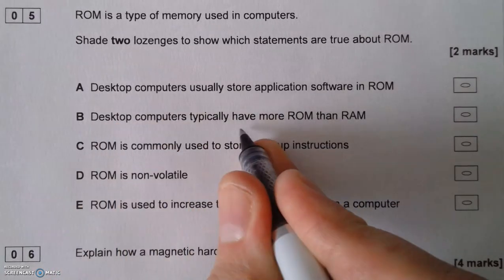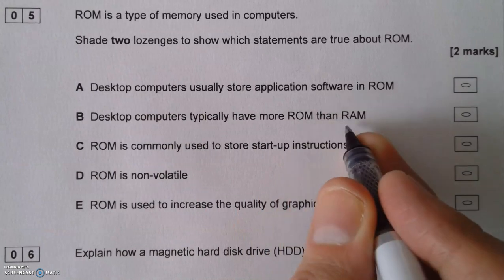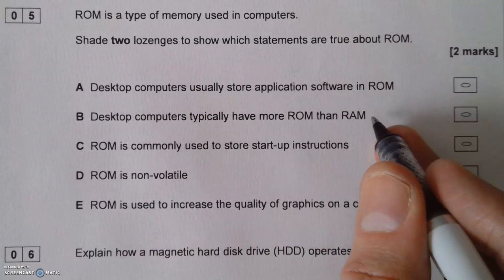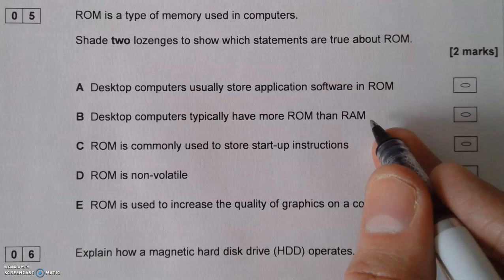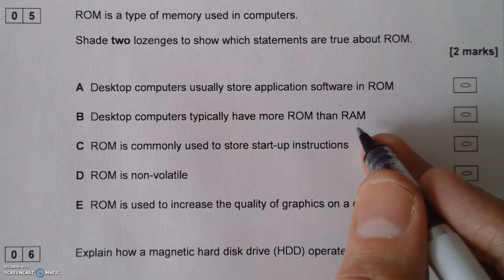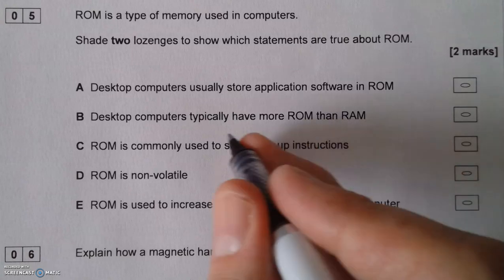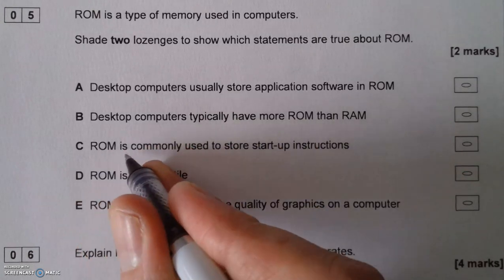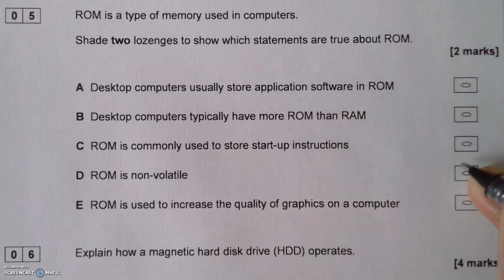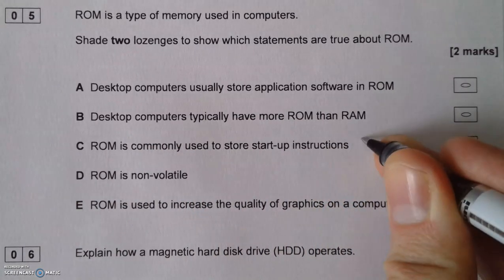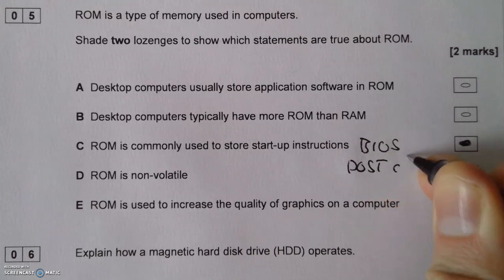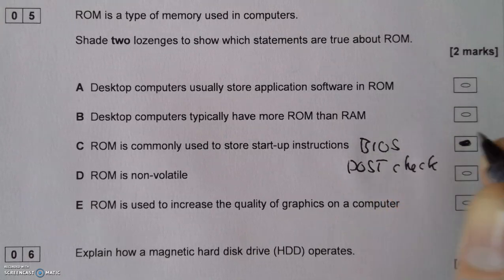Statement B: desktop computers typically have more ROM than RAM. Definitely not, not nowadays. You might have been able to say that 40 years ago, but definitely not now. You're talking kilobytes of ROM and gigabytes of RAM, so that definitely isn't true. Statement C: ROM is commonly used to store startup instructions. Yes, that is true — that's what I talked about with the BIOS and the POST check.